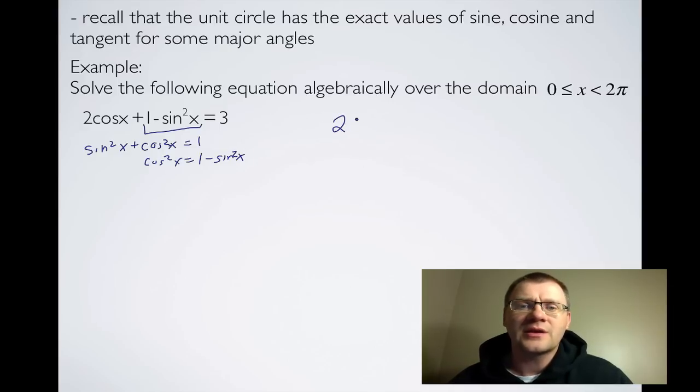So I end up getting 2cosx and instead of 1 - sin²x, I get cos²x, or cos squared x.